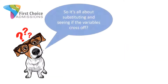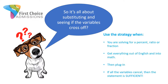So I know what some of you are thinking: really, all I have to do is substitute in and see if all the variables cross off? That's it? Yeah, that's exactly right. Because remember, in data sufficiency, you're not being asked to actually solve for the value. We don't care what the actual value is. We just care that we could calculate it. So use this strategy whenever you're solving for a percent, ratio, or fraction on a data sufficiency question.